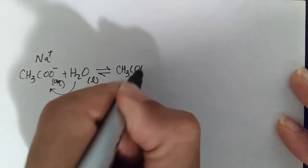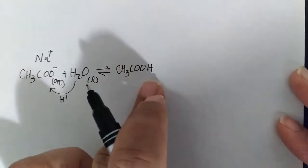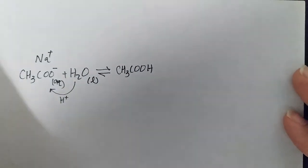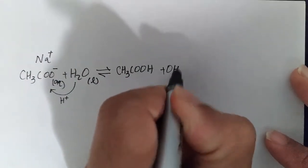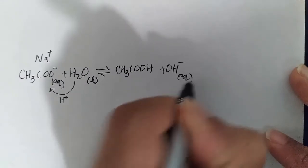acetic acid CH3COOH—acetic acid and acetate are a conjugate acid-conjugate base pair—plus OH-. All of these are dissolved in water, aqueous.